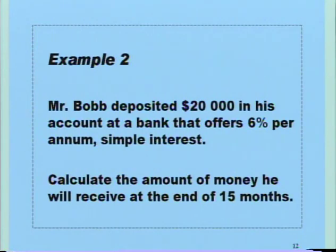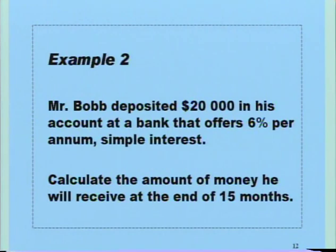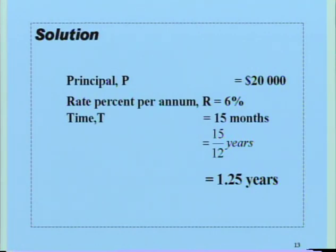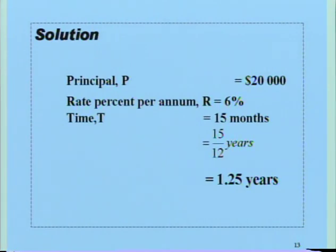Our second example. Mr. Bob deposited $20,000 in his account at a bank that offers 6% per annum simple interest. Calculate the amount of money he will receive at the end of 15 months. Principal P is equal to $20,000. Rate percent per annum R is equal to 6%. Time must be expressed in years, so 15 months is converted to years: 15 divided by 12, which gives us 1.25 years.